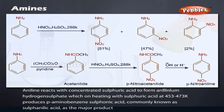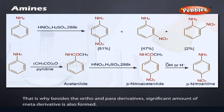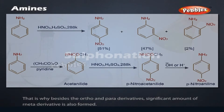Nitration: Direct nitration of aniline yields tarry oxidation products in addition to the nitro derivatives. Moreover, in the strongly acidic medium, aniline is protonated to form the anilinium ion, which is meta-directing. That is why, besides the ortho and para derivatives, a significant amount of meta-derivative is also formed.